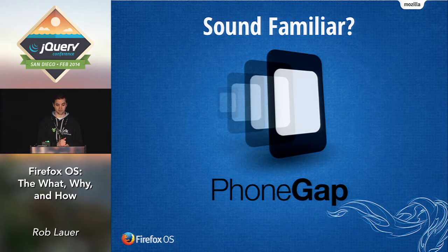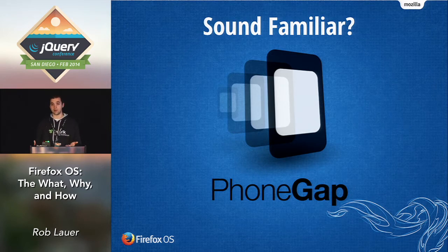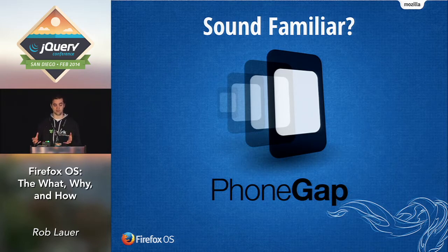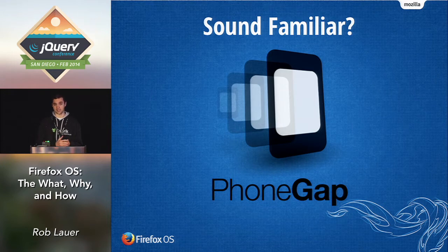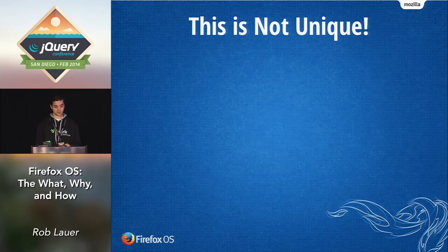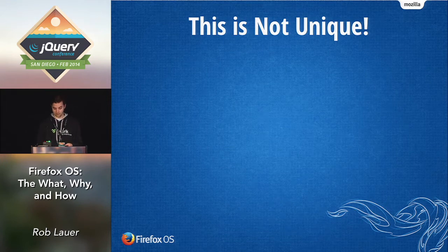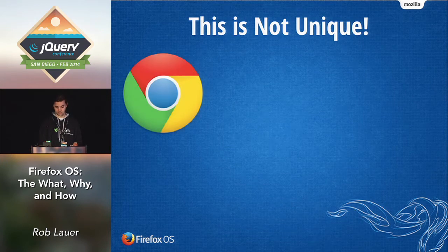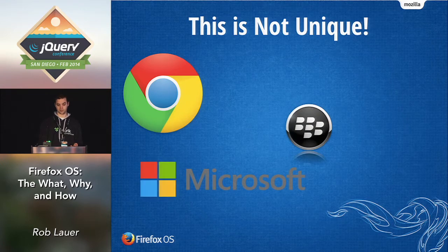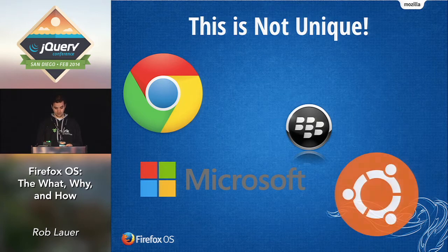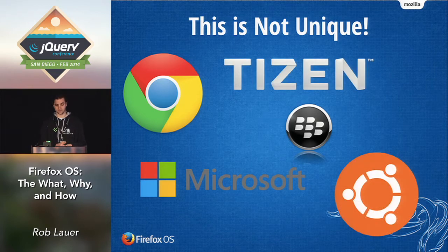This may sound familiar if you're a PhoneGap or Cordova developer. It's easy to compare Firefox OS to PhoneGap — PhoneGap provides the ability to write an HTML5 app and wrap it into a native container, then install it on a variety of platforms. Firefox OS support is actually available in PhoneGap right now. This idea of running HTML5 apps natively is no longer unique to PhoneGap. We have Chrome OS from Google, BlackBerry 10, Microsoft with Windows 8 and WinJS, Ubuntu Touch, and Tizen from Samsung — all supporting HTML5 apps natively.